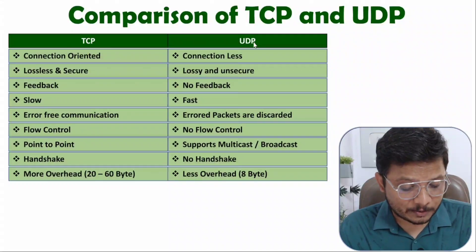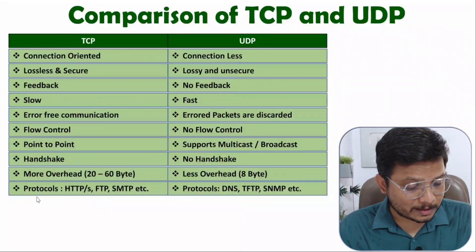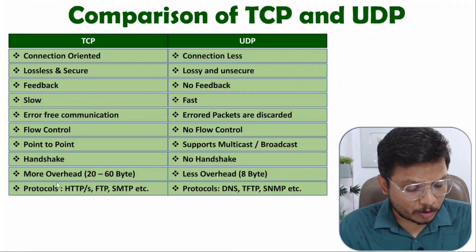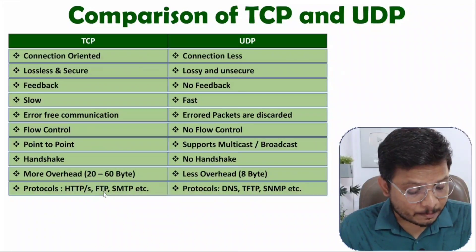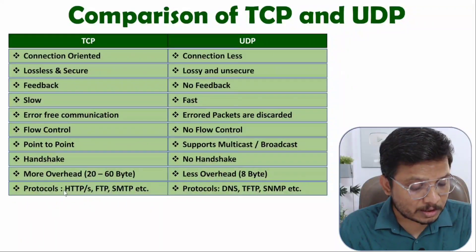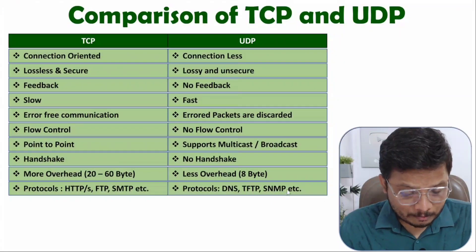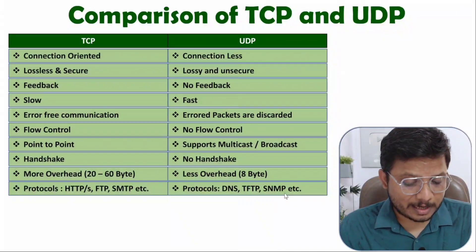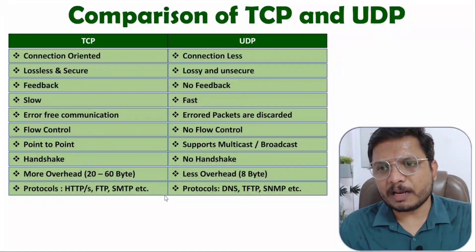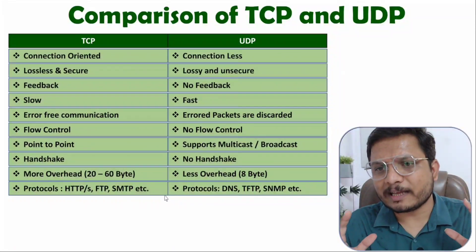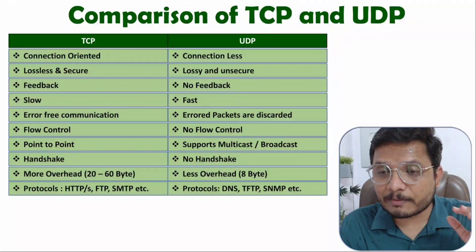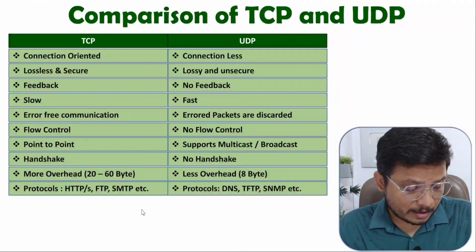When it comes to protocols, TCP uses protocols like HTTP, HTTPS — which belong to web browsers — as well as FTP (File Transfer Protocol) and SMTP, which belongs to email services. With UDP, protocols like DNS, TFTP, and SNMP are used. I'll give a detailed introduction to all these protocols separately.